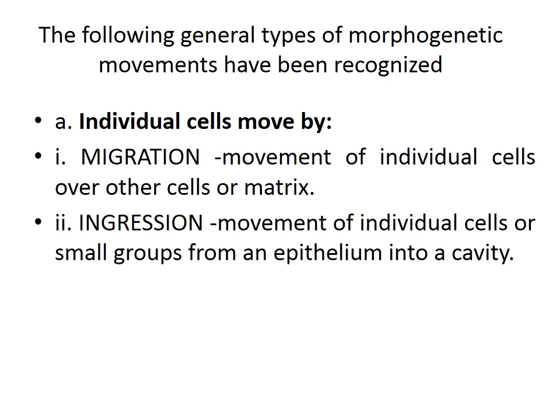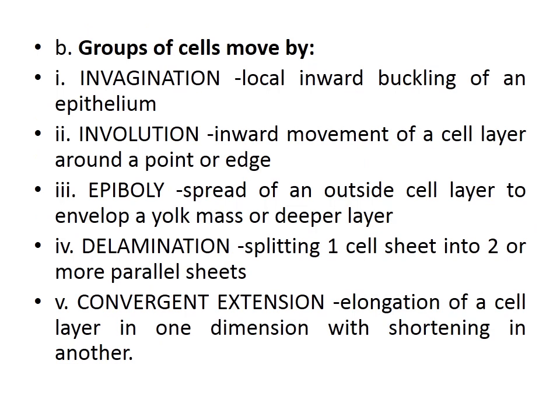Each cell is destined to become a particular portion of the embryo, so movement takes place accordingly. For group cell movements, the first type is invagination — local inward buckling or pushing of an epithelium. Then comes involution, the inward movement of a cell layer around a point or edge, usually through the blastopore.